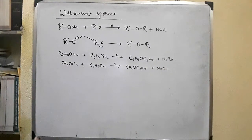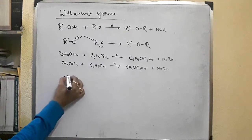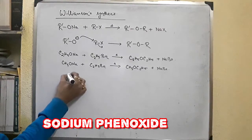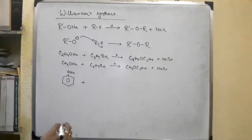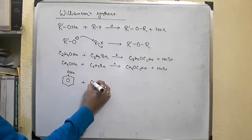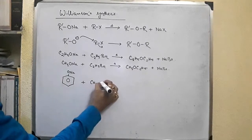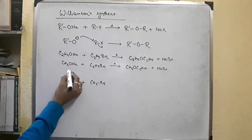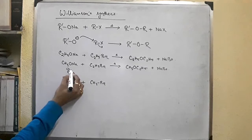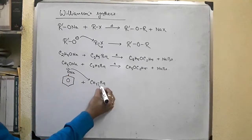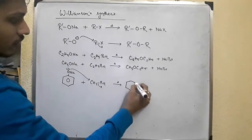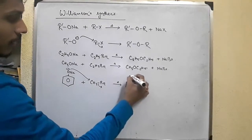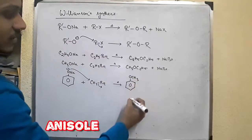This reaction is also useful in preparing phenolic ethers by the treatment of sodium phenoxide with a suitable alkyl halide. Taking CH3Br, the nucleophile attacks, the leaving group leaves, and we get a phenolic ether known as anisole.